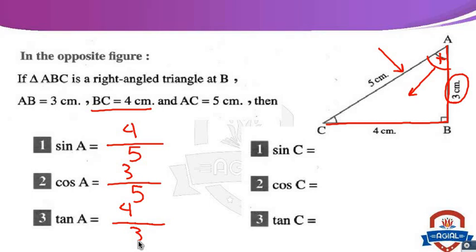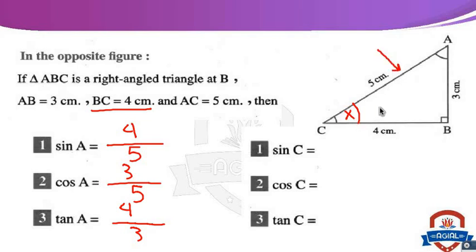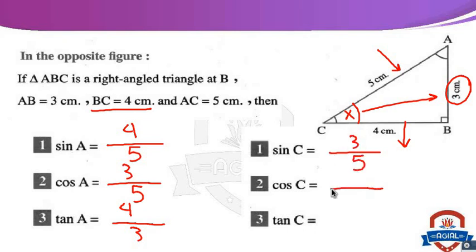Now find sine C, cosine C, and tan C. Where is angle C? Angle C is here. The hypotenuse is AC, the opposite of angle C is AB, and the adjacent of angle C is BC. Sin C equals opposite over hypotenuse equals 3 over 5. Cosine C equals adjacent over hypotenuse: the adjacent of this angle is 4, so cosine C equals 4 over 5.